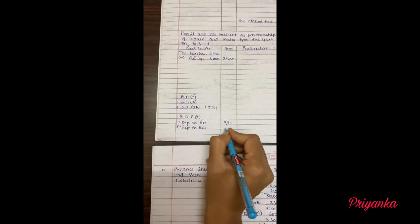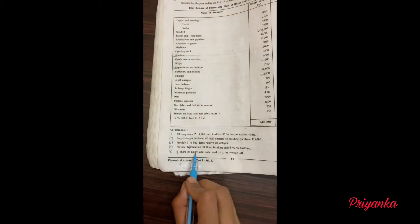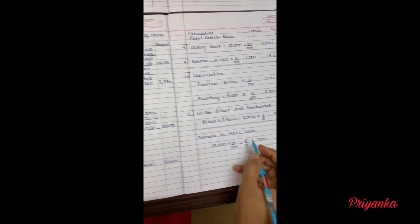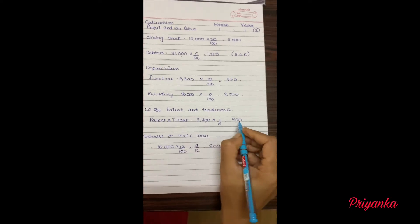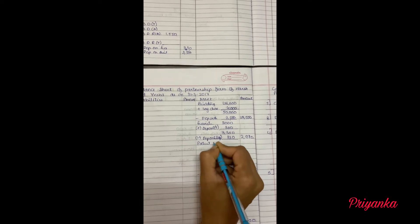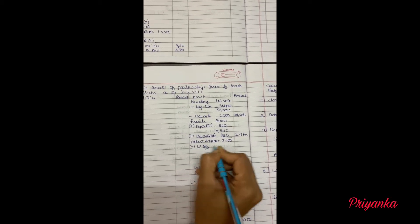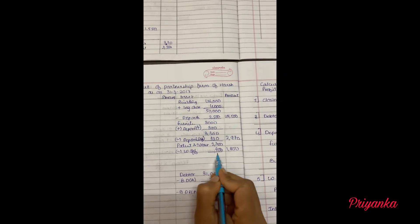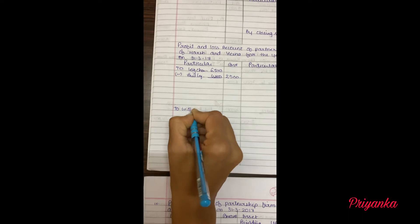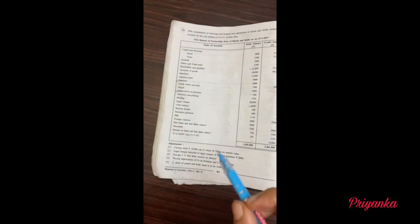Next, one-third share of patent and trademark is to be written off. The patent and trademark asset is 2,700. One-third of 2,700 is 900. Write-off means get it minus — 2,700 minus 900 gives 1,800 remaining on the asset side. The write-off amount of 900 has to be moved to the profit and loss account. We write down patent and trademark write-off at 900. We have now finished all the adjustments.